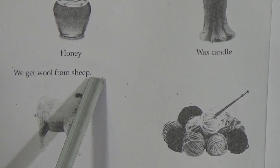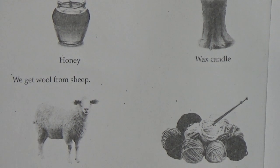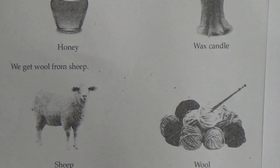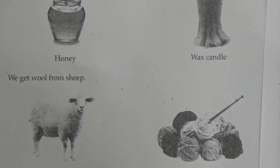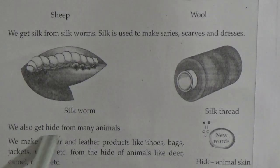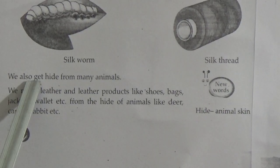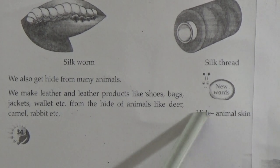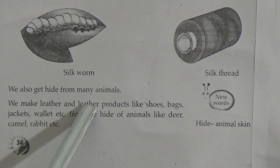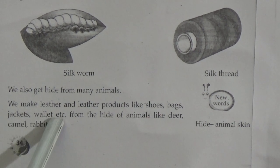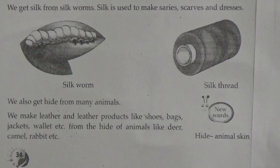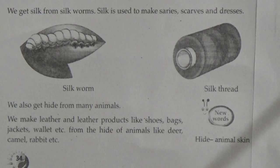We get wool from sheep — here is a picture of sheep and the wool we get from them. We get silk from silkworms — silk is used to make saris, scarves, and dresses. We also get hide from many animals. Hide means animal skin. We make leather and leather products like shoes, bags, jackets, and wallets from the hide of animals like deer, camel, and rabbit. Here is a picture of a leather bag and leather shoes.